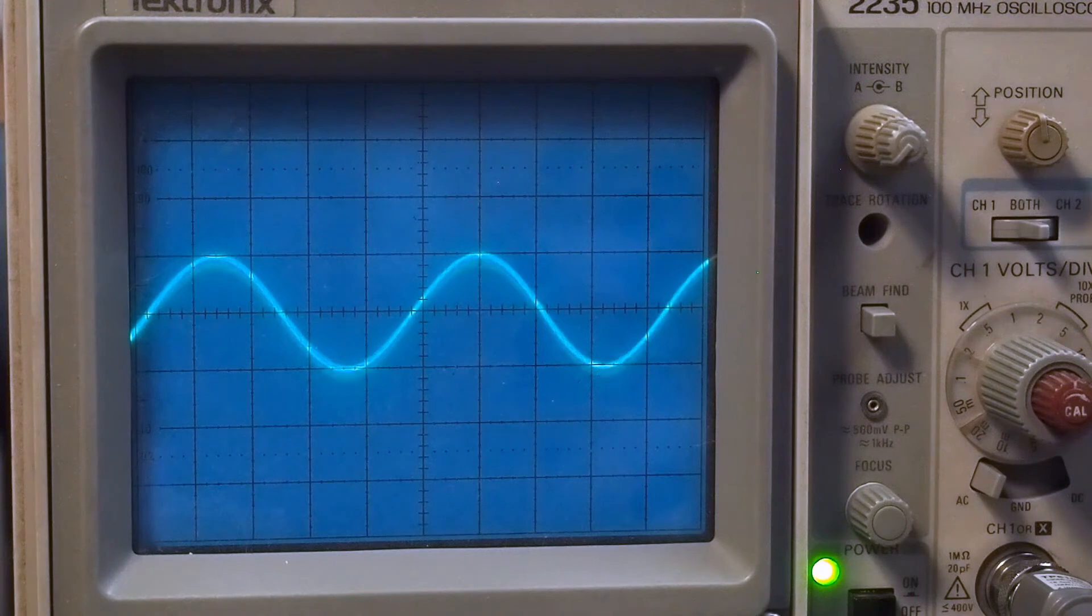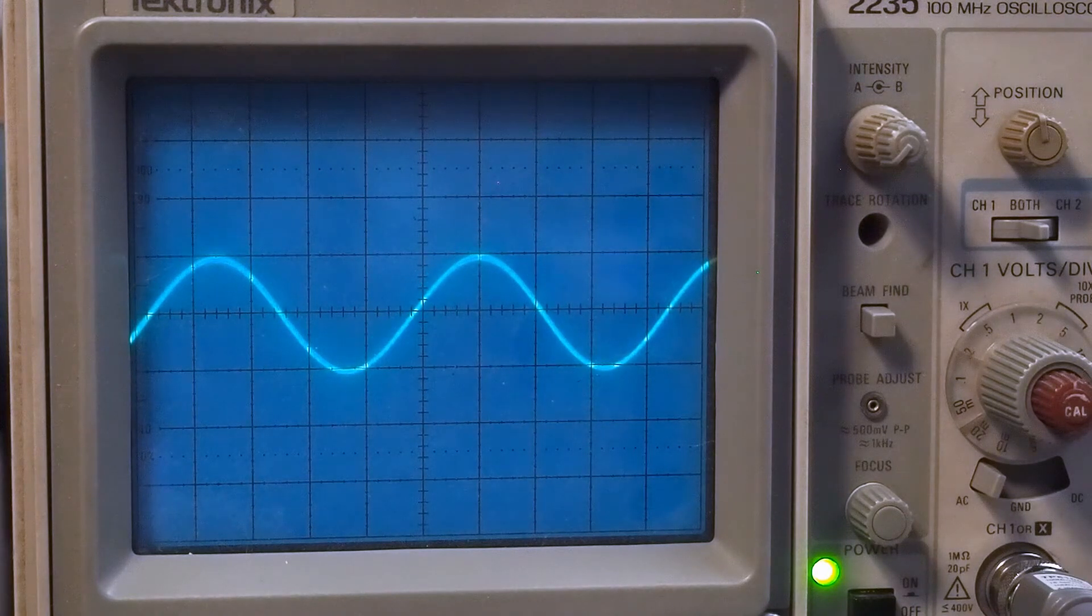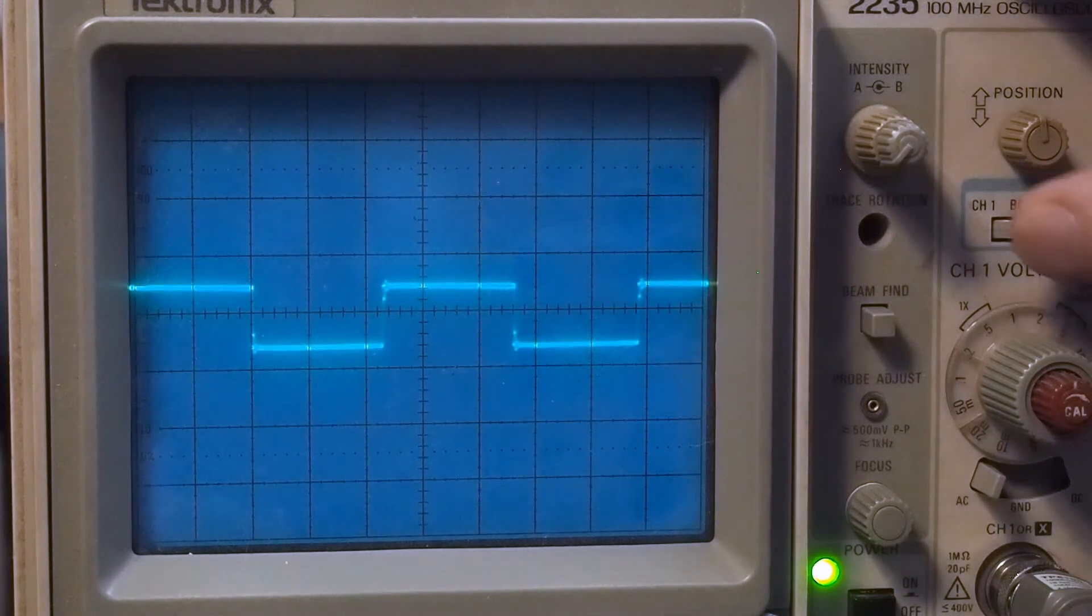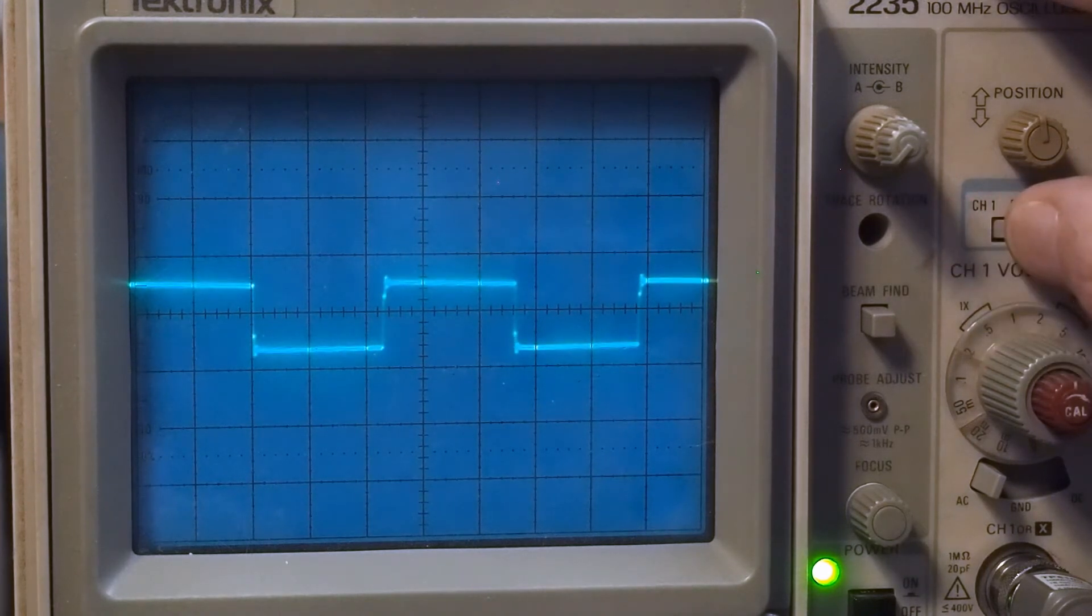Because the perfect amplifier takes the input signal and duplicates it on the output just amplified. So let's take a look at the square waves now. And there's the input. And there's the output.